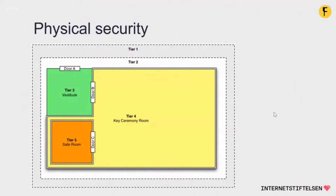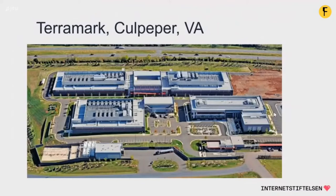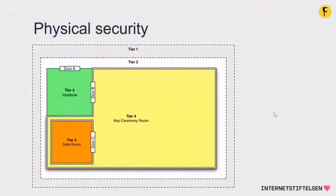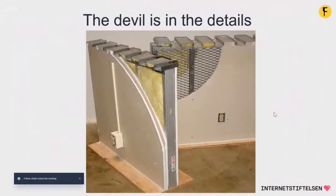The building complex contains Tier 1, Tier 2 is another part of the building, and Tier 3 is a vestibule. Tier 4 is a ceremony room and Tier 5 is a safe room. I like to think about this as a matryoshka — layer by layer with security and checks between. The devil is in the details: even the walls are extra strengthened to make sure that nobody can just walk in from somewhere where there isn't a door.